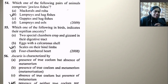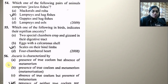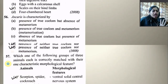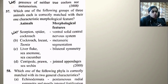Ascaris is characterized by absence of true coelom and absence of metamerism — neither true coelom nor metamerism. So the right option is D — presence of neither true coelom nor metamerism.